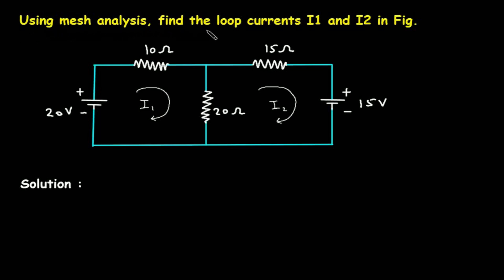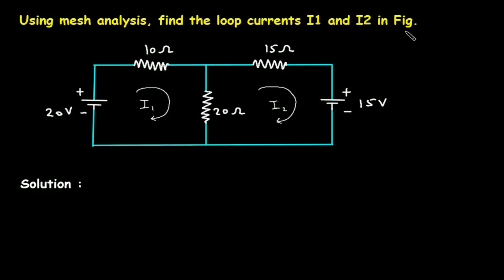Using mesh analysis, find the loop currents I1 and I2 in the figure. We have to find I1 and I2 in this figure using mesh analysis.